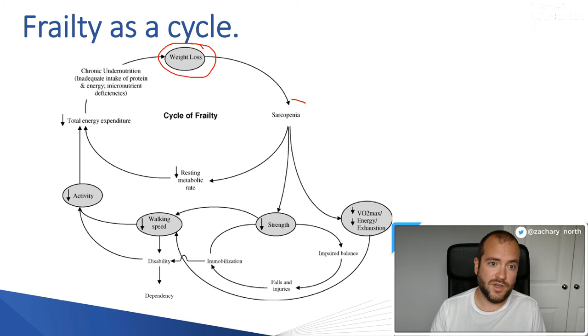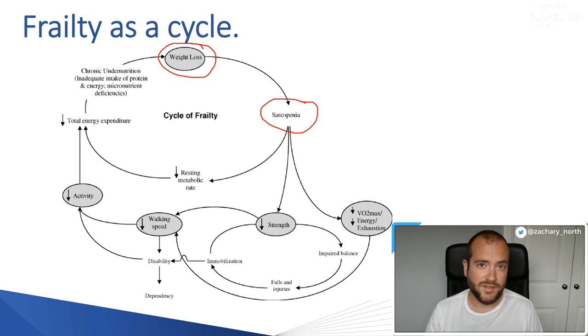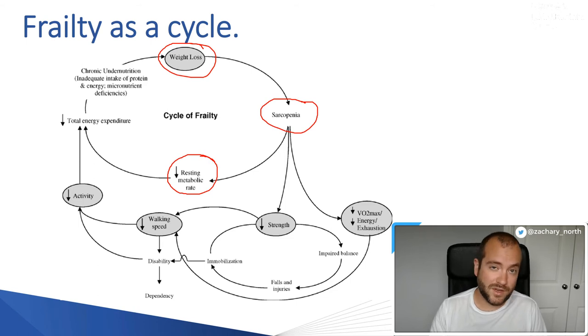From this, you find something called sarcopenia. Sarcopenia is a reduction in the muscle mass, in the skeletal muscle. That creates problems with mobility as well. You have this cycle where they're not taking enough calories and therefore they're losing muscle mass. The metabolic rate goes down as well. That means they have less calories coming in and also they're burning less. The calories that they're taking is drastically reduced.